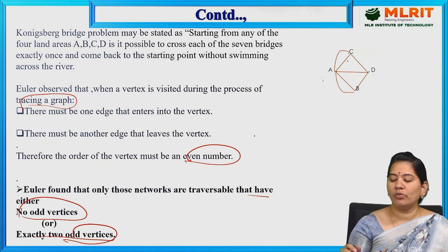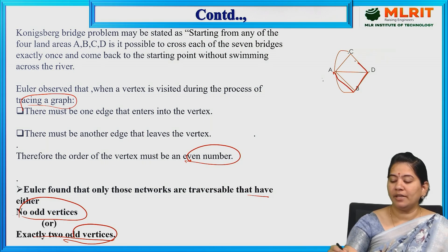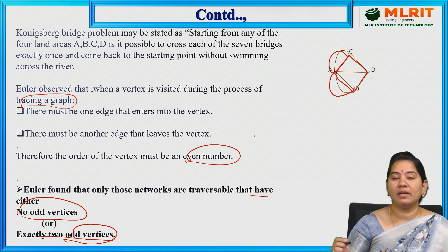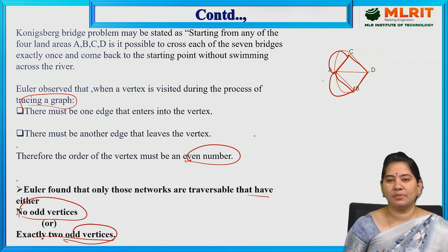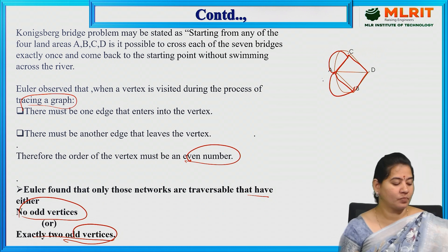This is how the graph is represented here: A to B, B to D, D to C, A to C, and A to B.